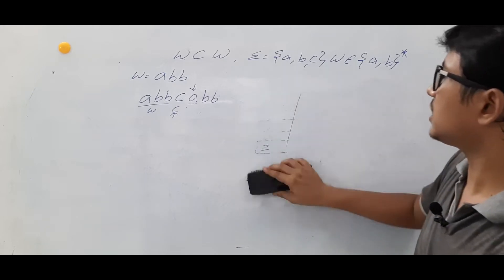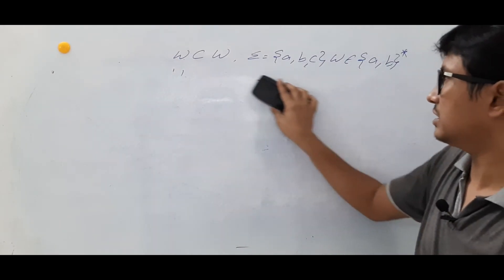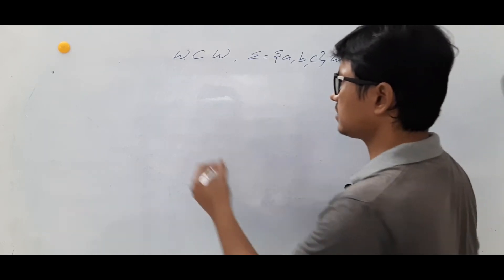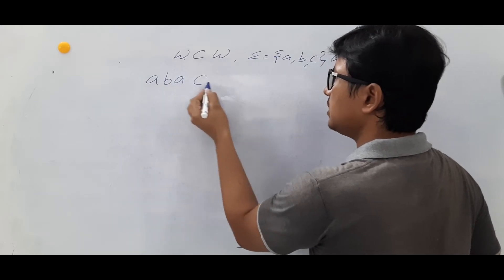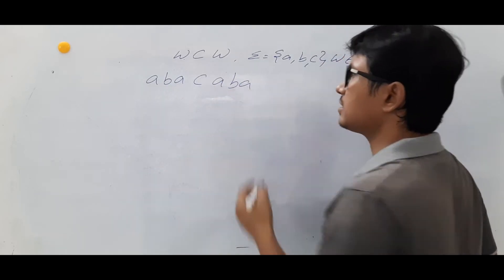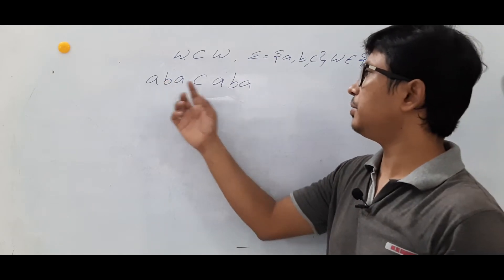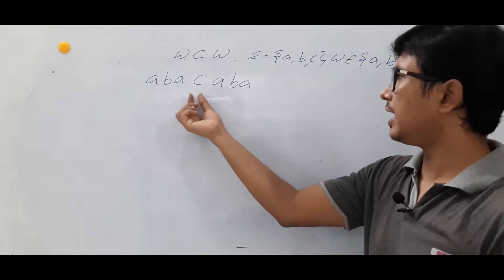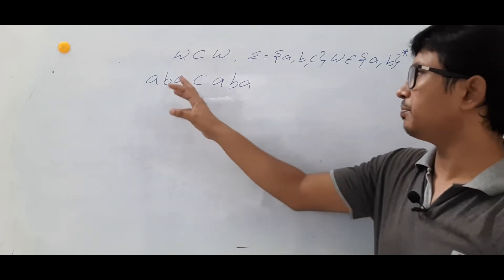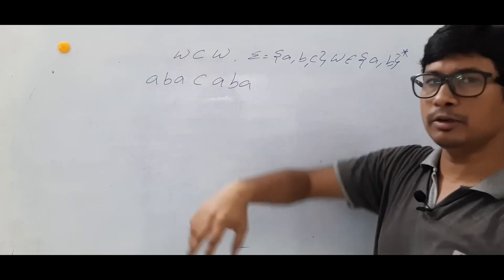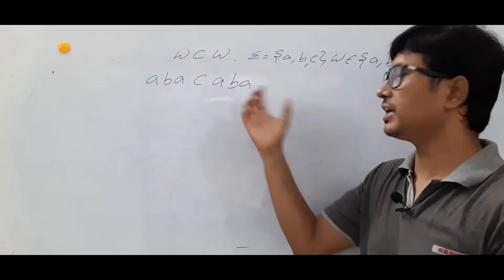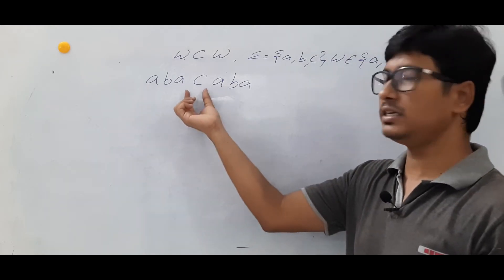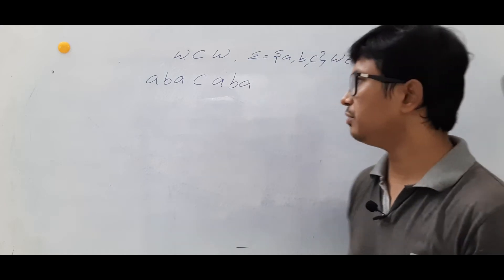Now, can we construct a Turing machine for it? We will check. Let me take W as A, B, A. See, W is A, B, A. Don't get confused with W and W reverse. I have taken W as A, B, A and I have a C, and again I have taken W. Some people may think that this is W, W-reverse because A, B, A reversed is A, B, A. But that is not my point — I have just taken W, C, W.